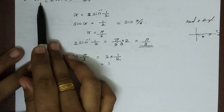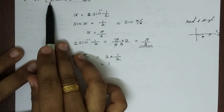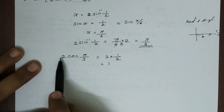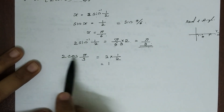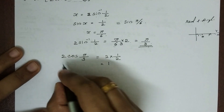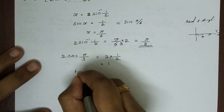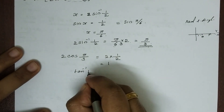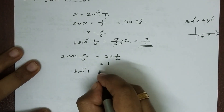What is tan inverse of 2 cos of 2 sin inverse 1 by 2? That equals tan inverse of 1, which is pi by 4.